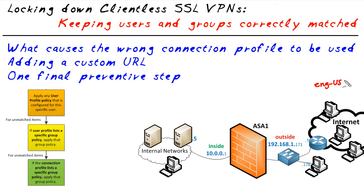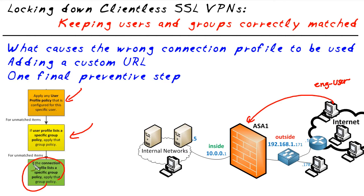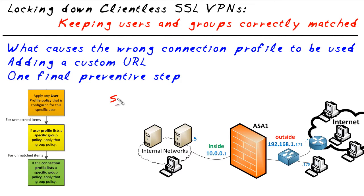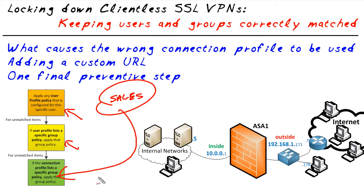We've got a user called engineering-user. On a good day, if they select the correct connection profile, they authenticate, and we give them the policy from their user account and the policy from their group. Because they came in on the right connection profile, that group matches the one assigned to their user account — and that's it, they get that exact policy. Unfortunately, if the user comes in on the sales connection profile instead, they still get their user profile and the engineering group policy, but any unassigned attributes are now going to come from the sales group, which is not our intended purpose.